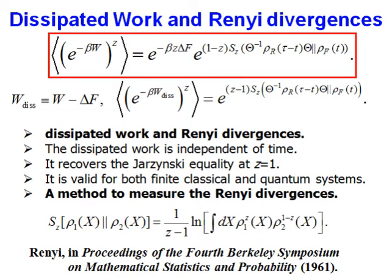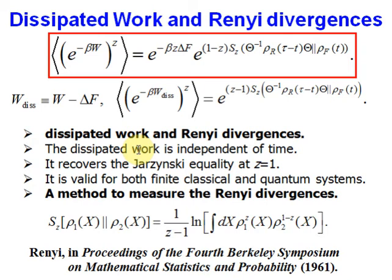It turns out that our result is this equality. On the left-hand side, it is the expectation value of the exponential minus beta*w to the power of z. On the right-hand side, we get two pieces: the first piece is the free energy difference, which is similar to the Jarzynski Equality, and the second piece is the family of Renyi Divergence between two states. The Renyi Divergence was defined by Renyi in 1961 and gives the distance between two distributions. If we define the dissipated work as the work minus the free energy difference, then this equality can be written in a more compact form: the generating function of dissipated work is a family of Renyi Divergence. T here can take any values from zero to tau, so this equality says that the dissipation is independent of time.